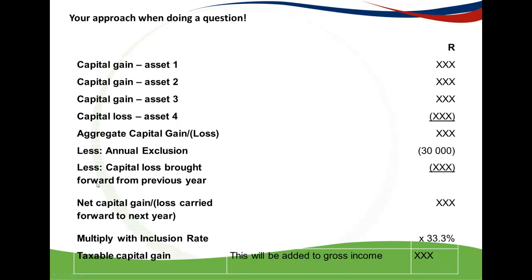From the aggregate capital gain or loss, you deduct your annual exclusion, and then deduct your capital loss brought forward from the previous year. This gives you your net capital gain or loss carried forward to the next year. If it's a positive figure, you multiply it by 33.3%. If it's a loss, you carry it forward to the next year of assessment. You will therefore never have a negative taxable capital gain — you will always only have a capital gain to include in the framework.